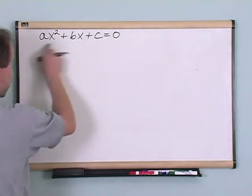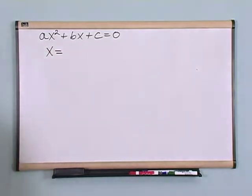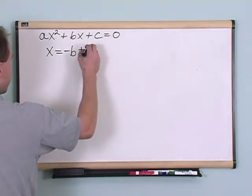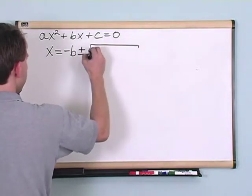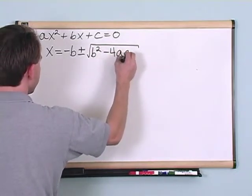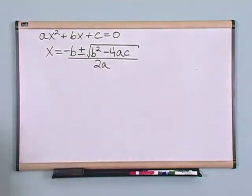Then, if you can't factor it, x will be equal to the following. Negative b plus or minus the square root of b squared minus 4 times a times c all over 2 times a. That's a mouthful, isn't it?